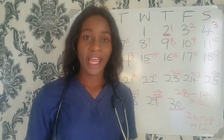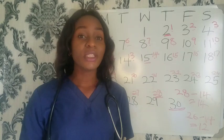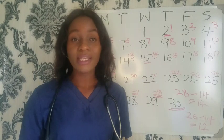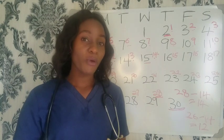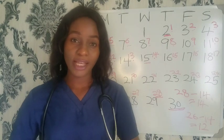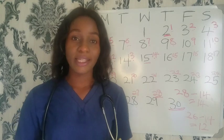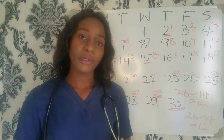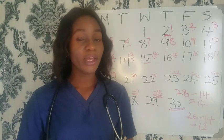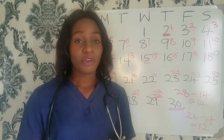Remember, ovulation is the release of a matured egg from the ovary. It takes place once every month depending on the woman's menstrual cycle, and once the egg is released it lasts for only 12 to 24 hours before it dies off.